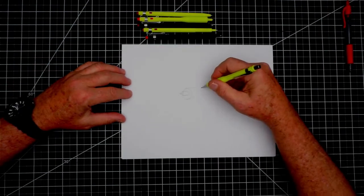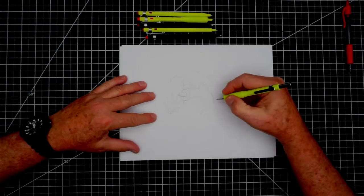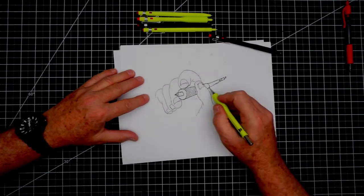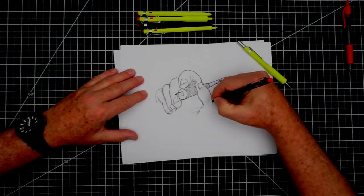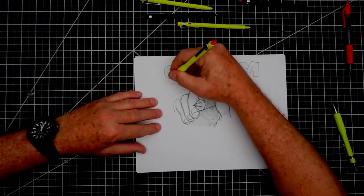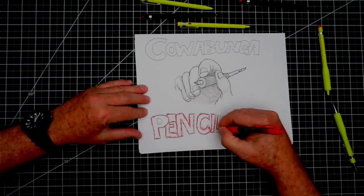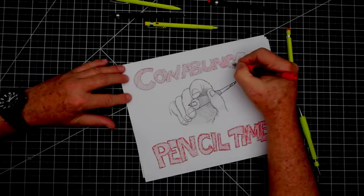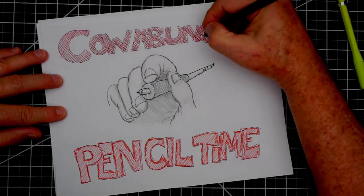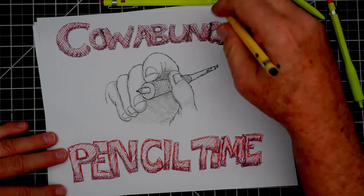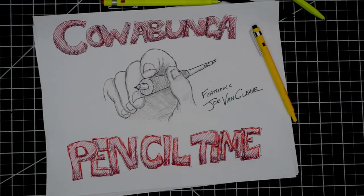All right, we're recording here. Episode two of Cowabunga Pencil Time. We got a beautiful drawing being made by my friend and YouTube superstar Joe Van Cleve. This video is about a bunch of ballpoint pens that I made in the style of some mechanical pencils that I also made. They're all free on GitHub. You could go get them, download them, put them on your printer. Bada bing, bada boom, you got some pencils. All right, let's get into the video. Here we go.